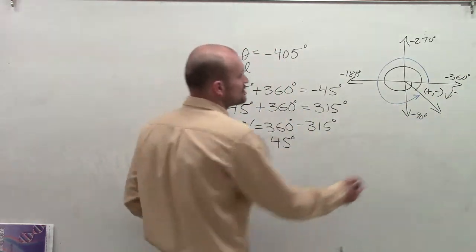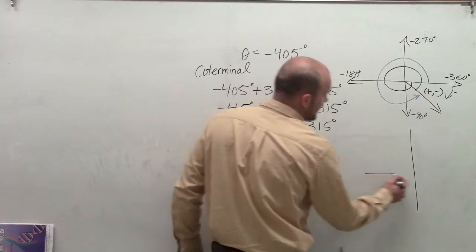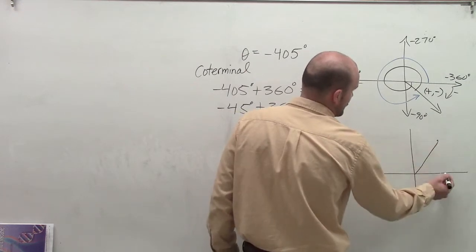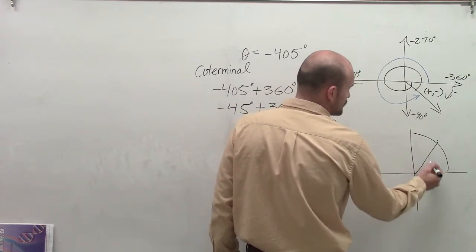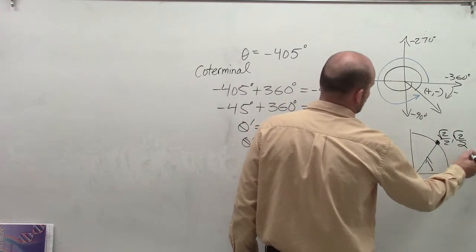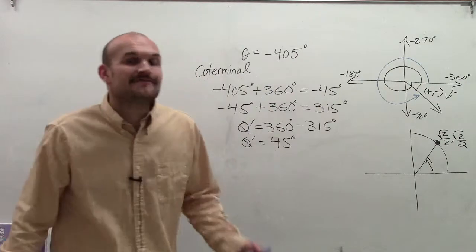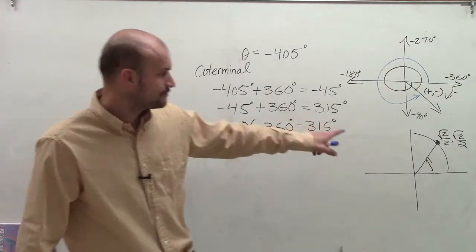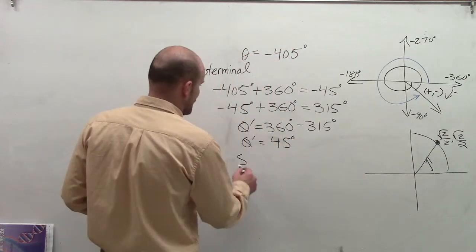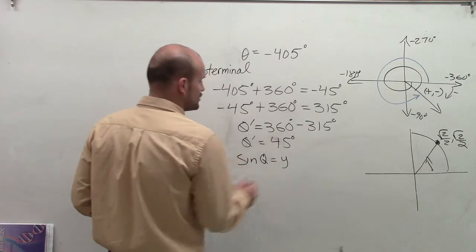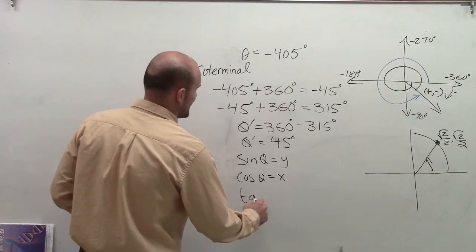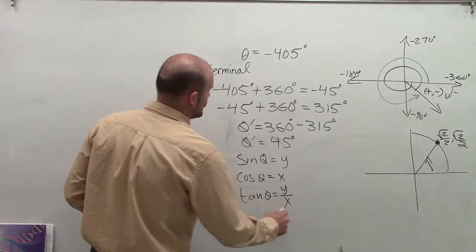That's the main measurement. Using the unit circle for the first quadrant at 45 degrees, I remember this point as square root of 2 divided by 2, comma square root of 2 divided by 2. So I can find the sine, cosine, and tangent of my 45 degree angle. The sine equals the y-coordinate, the cosine equals the x-coordinate, and the tangent equals the ratio of y over x.